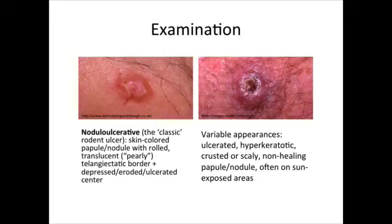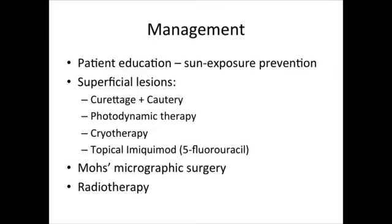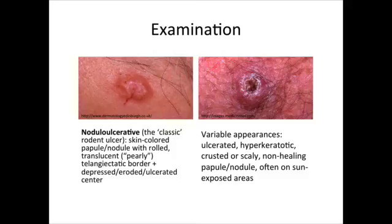SCCs are variable in their appearance, but are usually centrally ulcerated, with areas of hyperkeratosis, scaling, or crusting. These lesions may appear non-healing and are often on sun-exposed areas.